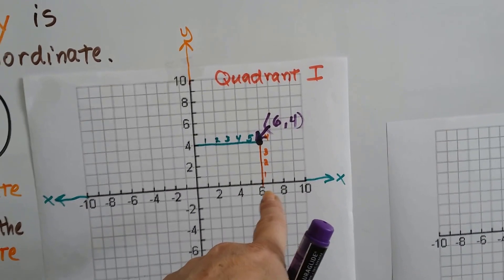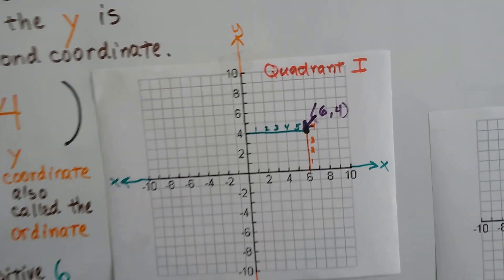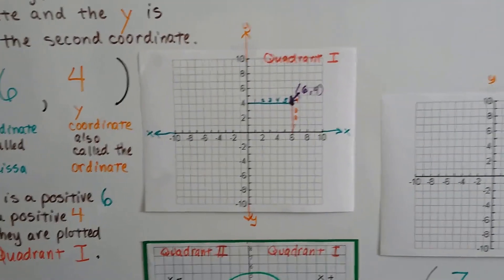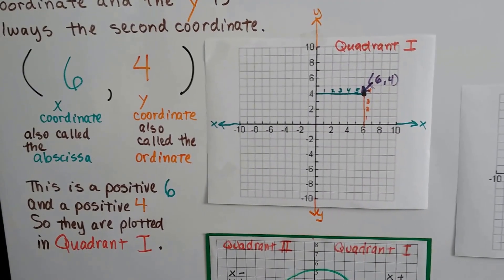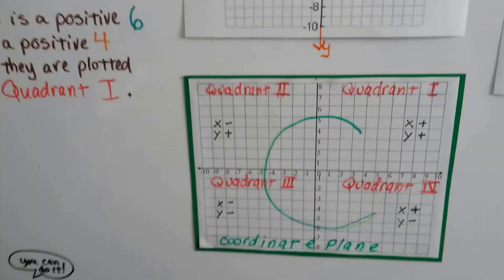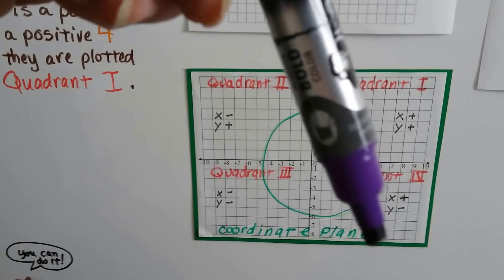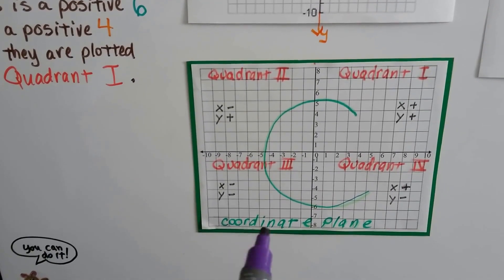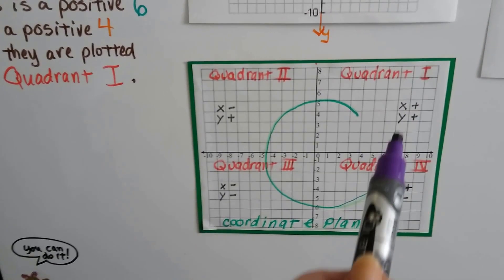That's where x is on the 6 going up, and the y is on the 4, and they meet. This is a positive 6 and a positive 4, so they're plotted in quadrant 1. Remember from the last video, the quadrants are numbered 1, 2, 3, 4 in the shape of a C — like for coordinate plane, that's how you can remember it. And this is where the two positives would be.